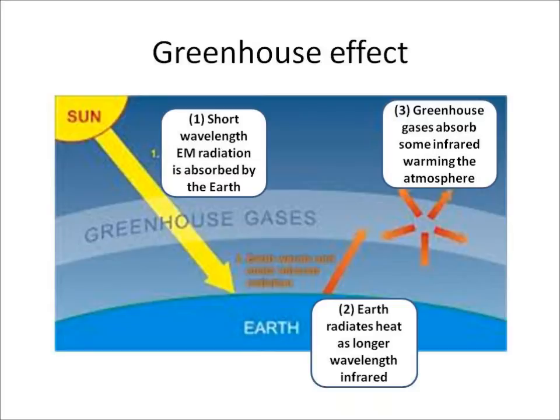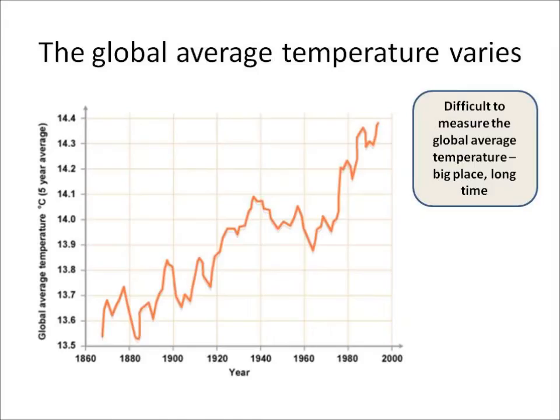This is a reminder of how the greenhouse effect works. Short wavelength electromagnetic radiation is radiated by the Sun and absorbed by the earth. The earth then radiates that heat as a slightly longer wavelength infrared, and that wavelength is then absorbed by greenhouse gases, thereby warming the atmosphere.